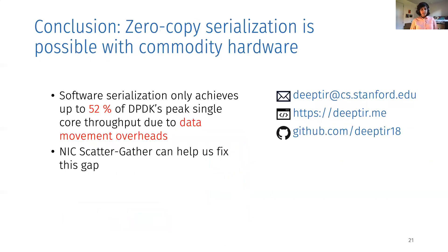In conclusion, zero-copy serialization is possible with commodity hardware. Software serialization approaches are bottlenecked today by data movement, and we believe that NIC scatter-gather can help fix this gap. Thanks, and these are some ways to contact me.